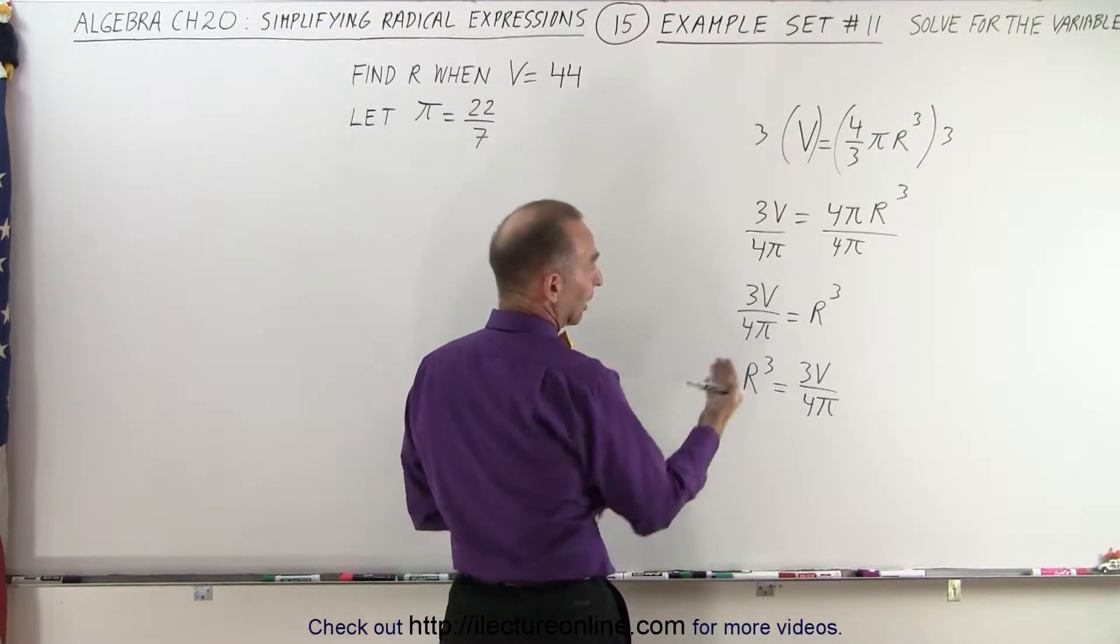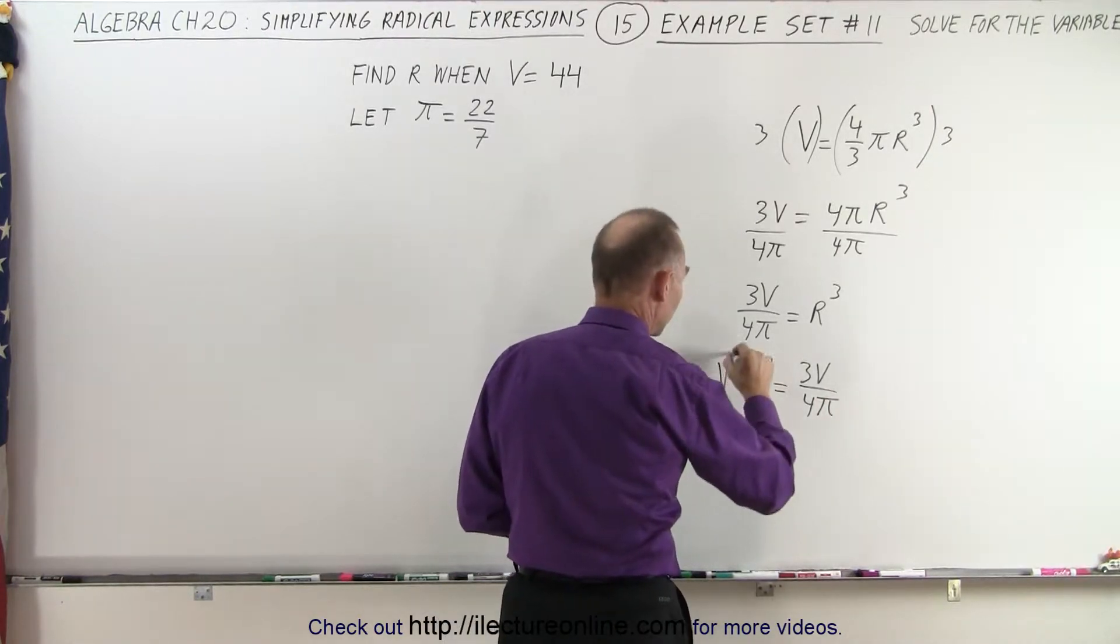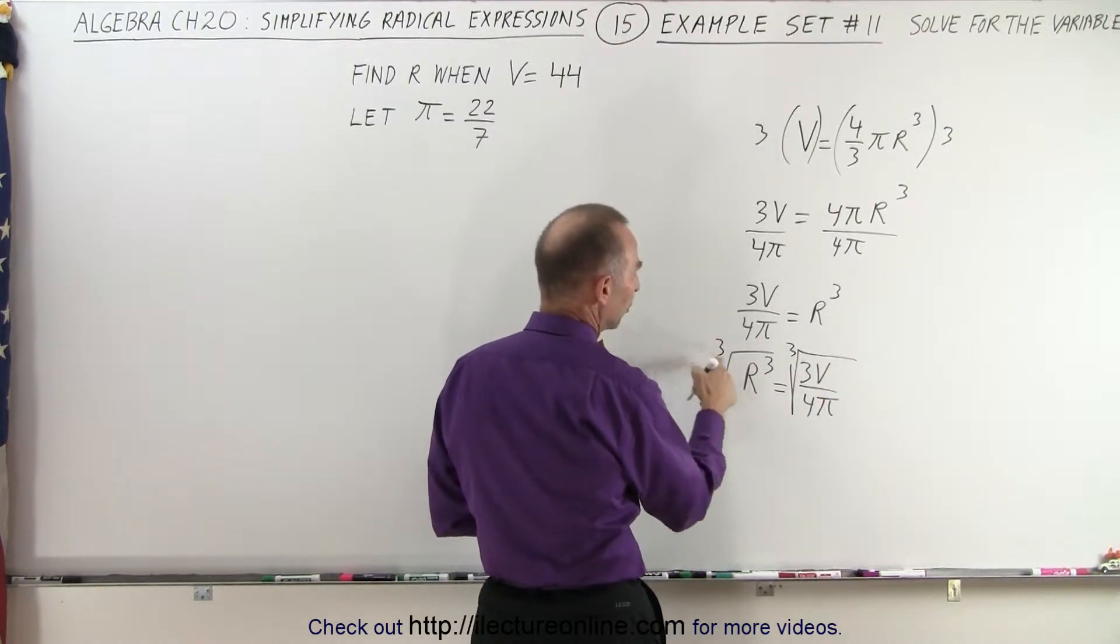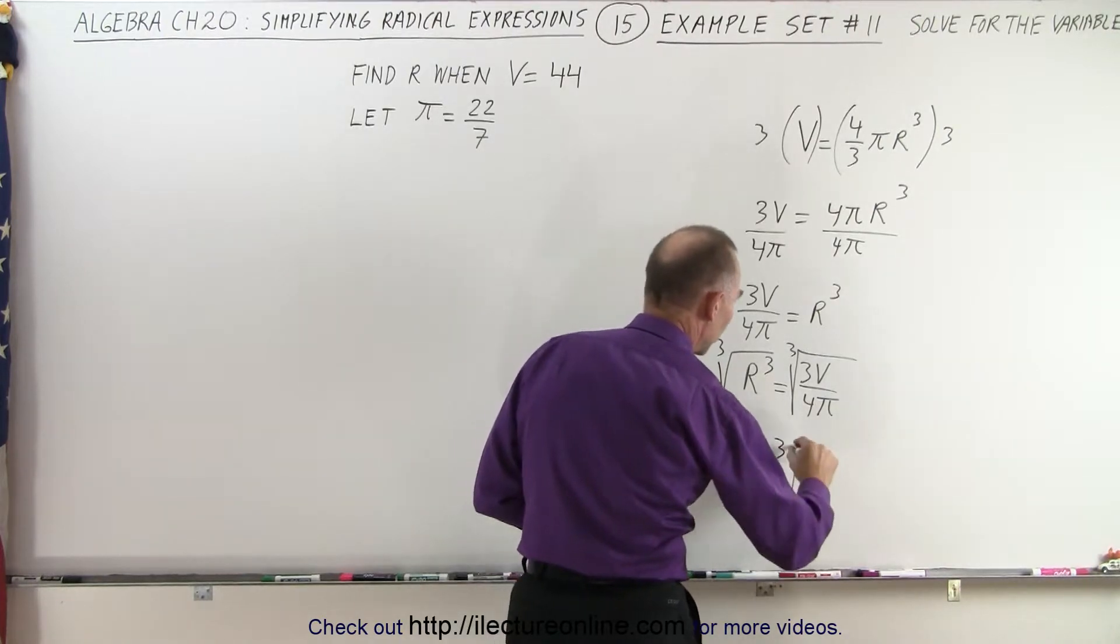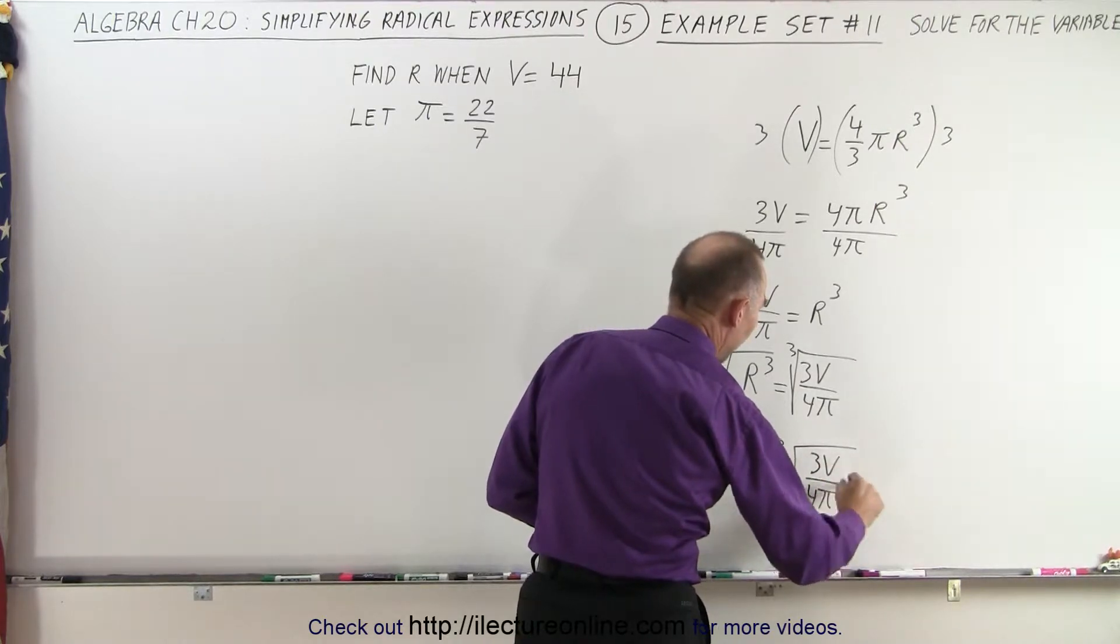And finally, to get r, we need to take the cube root of both sides. So we take the cube root of the left side and the cube root of the right side. Of course, the cube root of r cubed is simply r. And that equals the cube root of 3v divided by 4 pi.